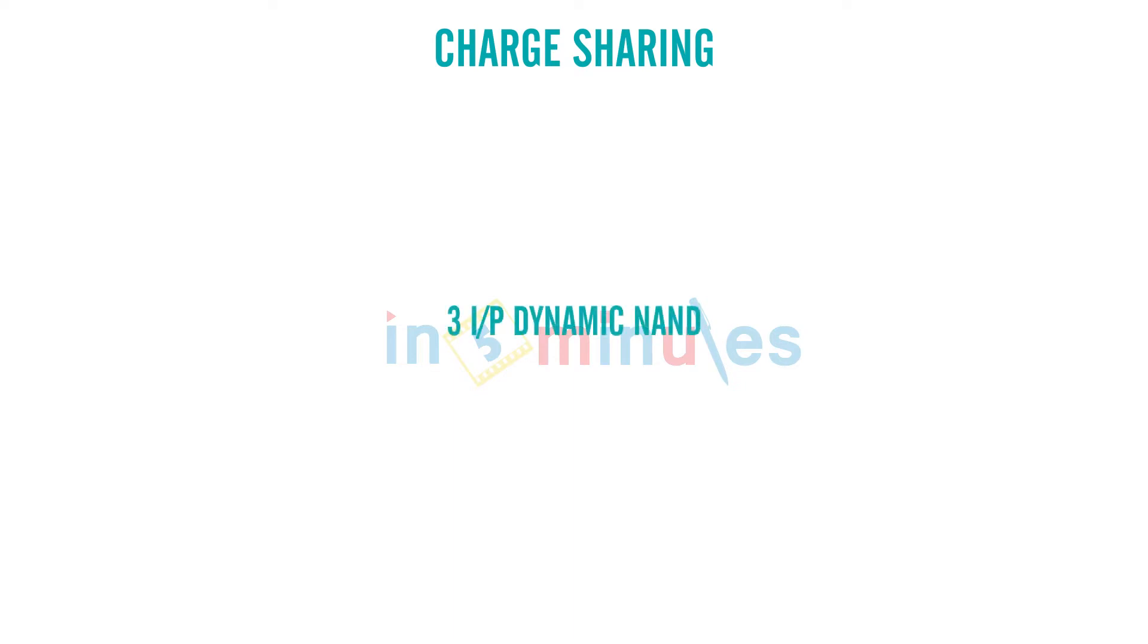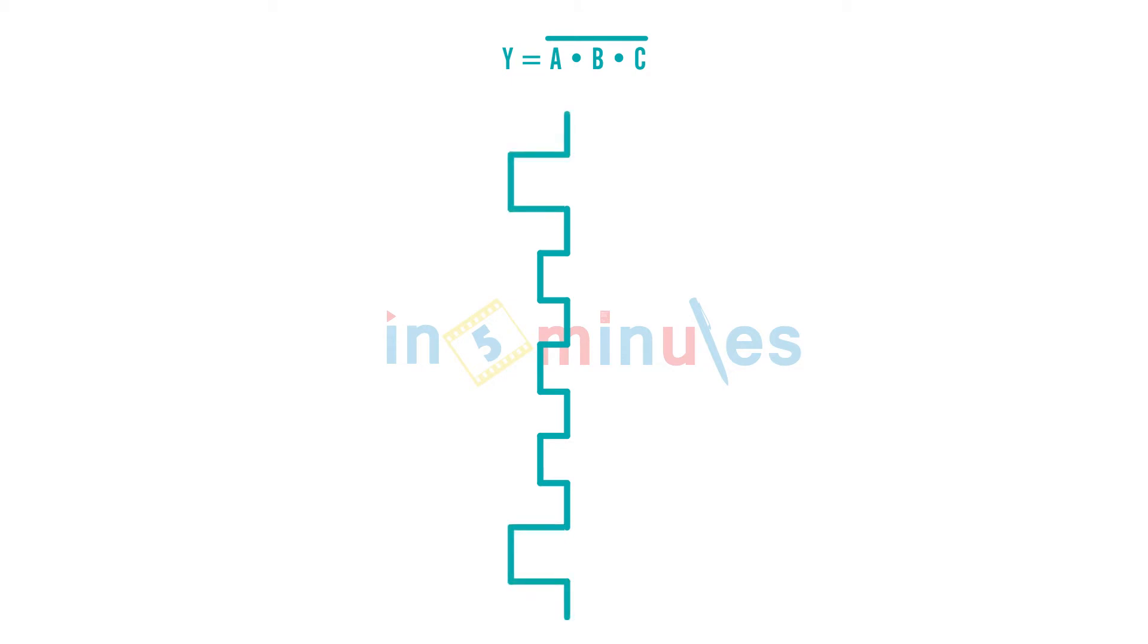By now everyone knows how to draw a three input dynamic NAND. Let's quickly draw that and evaluate what's going to happen. Very similar to what we do in static NAND, just write the expression Y equal to A dot B dot C the whole bar. The pulldown is going to be the same, A dot B dot C.